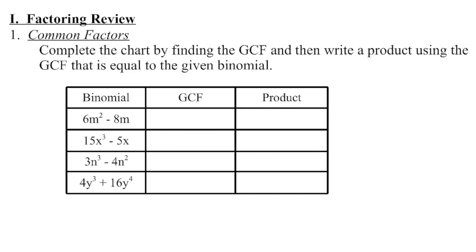In order to work with rationals, we have to be able to factor. So we're going to quickly brush up on our factoring skills. Remember that the first thing we're always going to check for is what's called a greatest common factor. You're going to take a look at, in this case, the binomial — we've got two terms here. Is there a number and variable that can be divided evenly out of both of those terms?